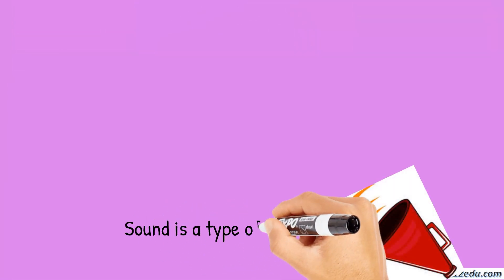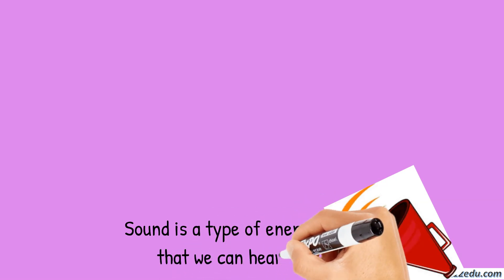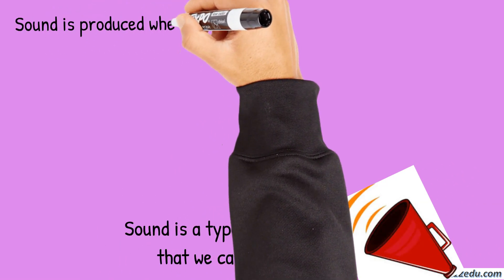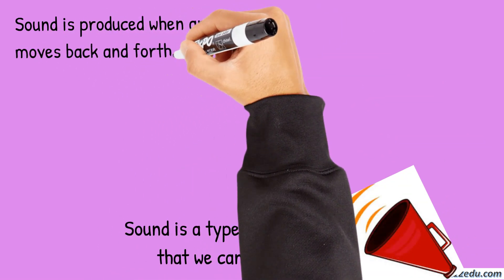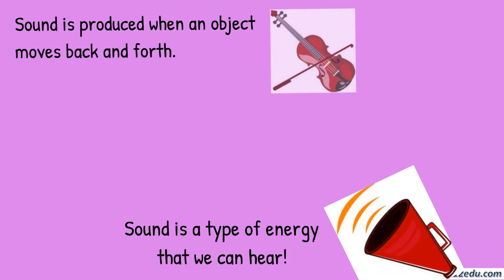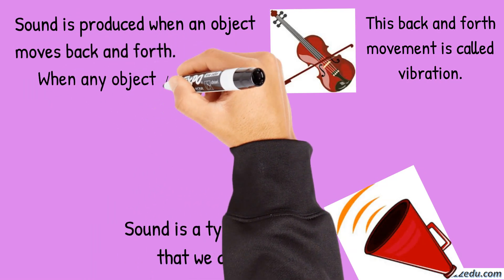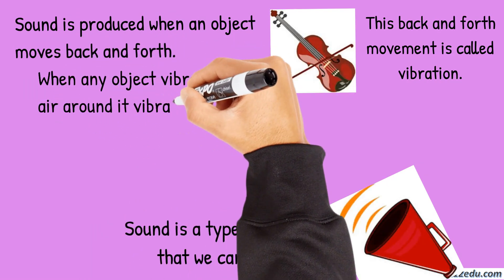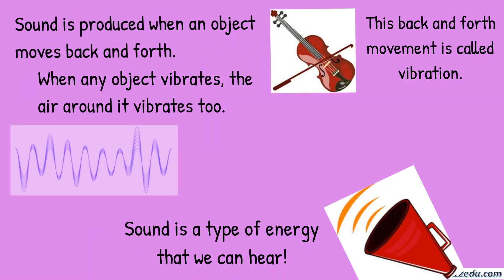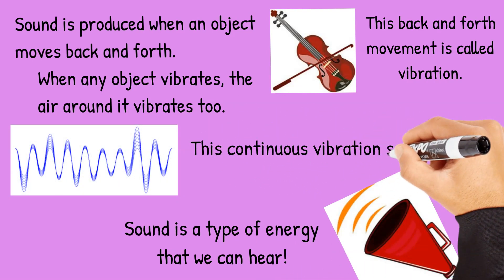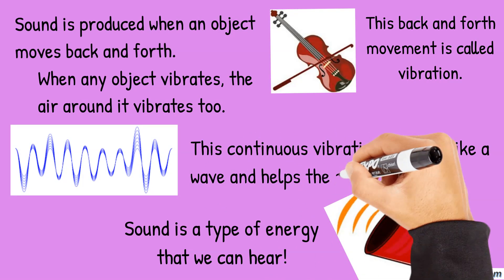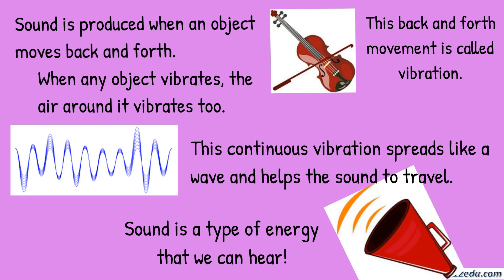Sound is the type of energy that we can hear. It is produced when an object moves back and forth. This back and forth movement is called vibration. When any object vibrates, the air around it vibrates too. This continuous vibration spreads like a wave and helps the sound to travel.